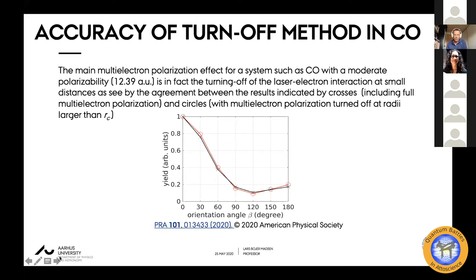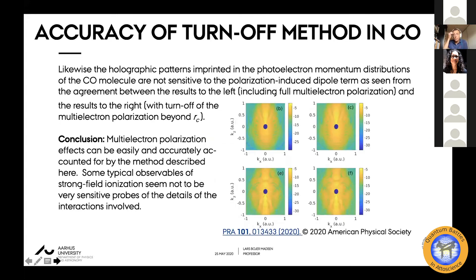We can also look at the model where we simply turn off the polarization potential beyond the cutoff radius — that's the difference between the crosses and the circles. For a system like CO, it's actually fairly accurate just to switch off the potential beyond the cutoff radius; the screening in the inner region is the main physical effect. Looking at momentum distributions with the laser polarization in the z direction, these momentum distributions are not very sensitive to the polarization-induced dipole term. It seems that multi-electron polarization effects can be easily and accurately accounted for by this method, with the main physics captured by the screening at smaller distances.